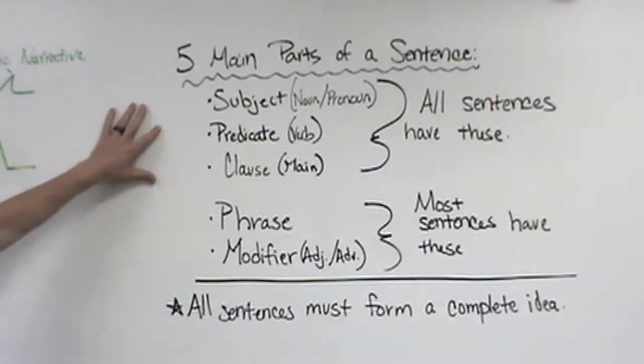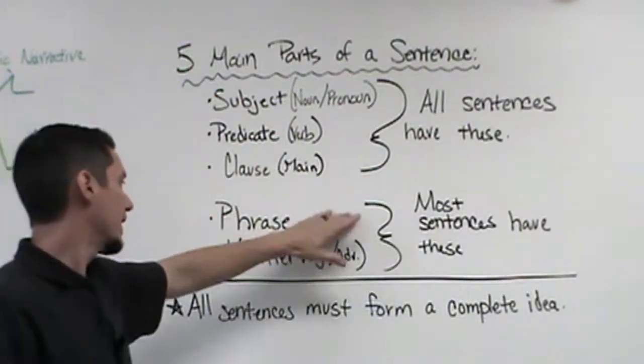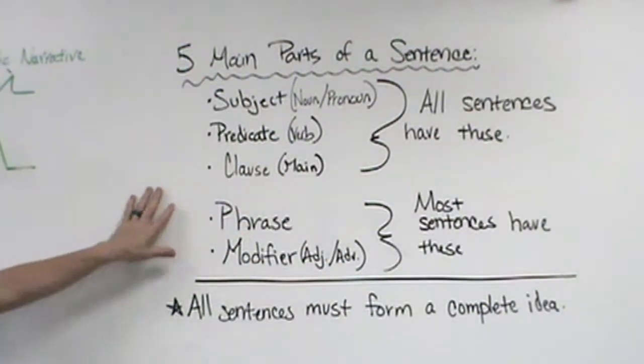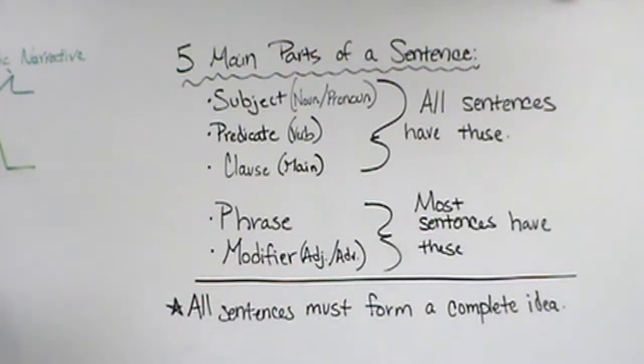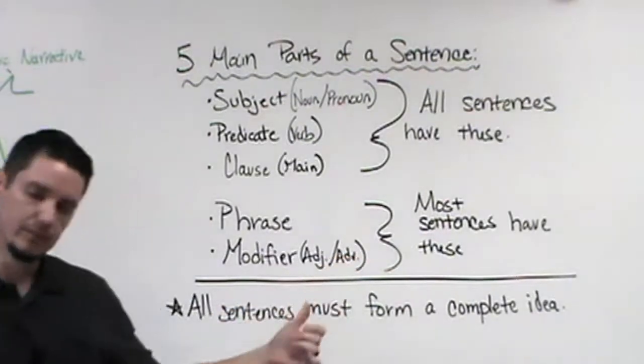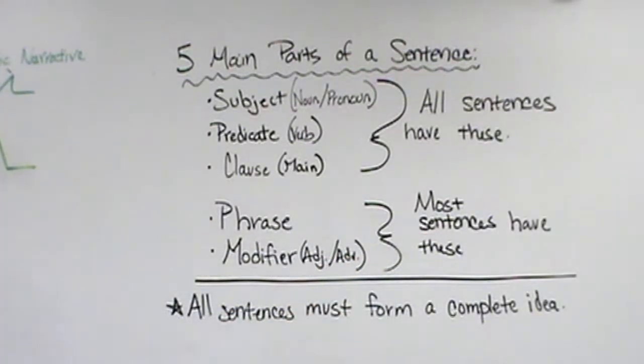All sentences have these. Then most sentences have a phrase or a modifier. For our modifiers, we have generally adjectives and adverbs. Does anyone remember what adjectives modify? What parts of speech? Nouns, or what words that replace nouns are called? Pronouns, yeah. So adjectives modify nouns or pronouns. Adverbs basically modify everything else for the most part.